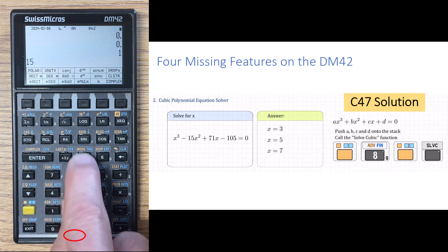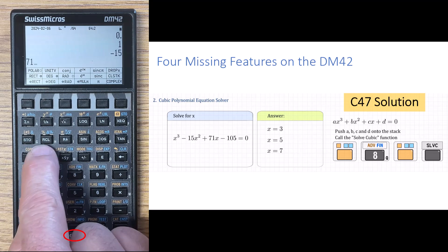So 1, enter, 15, negative, enter, 71, enter, and 105, negative, enter.